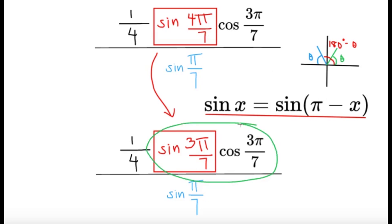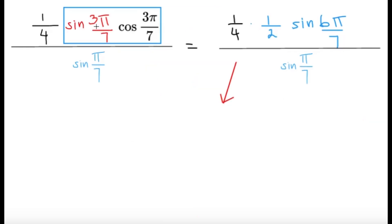Now, once these two are the same, we can apply the identity once again. So the sine three pi over seven, cosine three pi over seven, we're going to write it as one half sine six pi over seven.